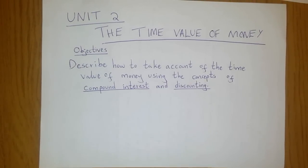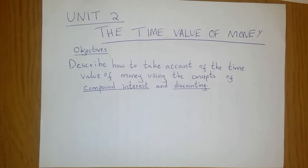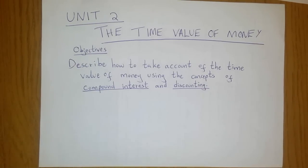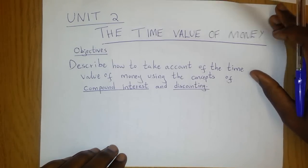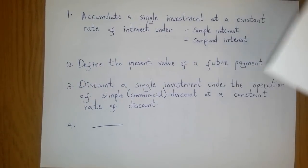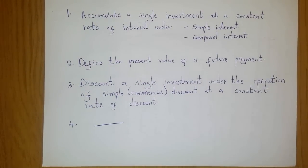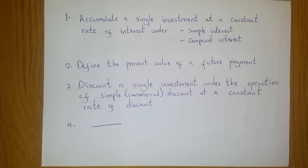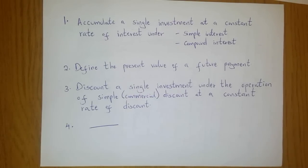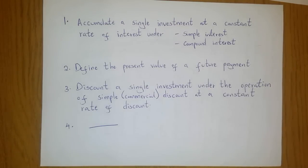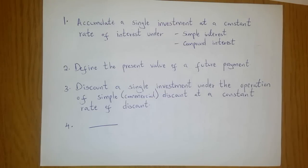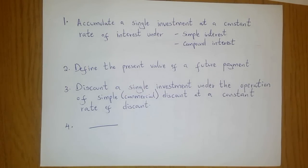The topic today is the time value of money, and I will quickly take you through our objectives. We are going to describe how to take account of the time value of money using the concepts of compound interest and discounting. Under that objective, we will accumulate a single investment at a constant rate of interest under both simple interest and compound interest. We will also define the present value of a future payment and discount a single investment under the operation of simple discount at a constant rate of return.